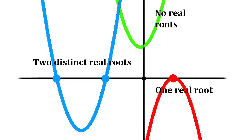To solve an equation means looking for values of x that make y equal to 0. These correspond to the points where the curve meets or crosses the x-axis. There are three possibilities. The curve may never meet the x-axis, in which case there are no real solutions. It may just touch the x-axis, in which case there's a single real solution — or, if you want to think of it that way, two real solutions that coincide. Or it may cross the x-axis in two places, in which case there are two distinct real solutions.